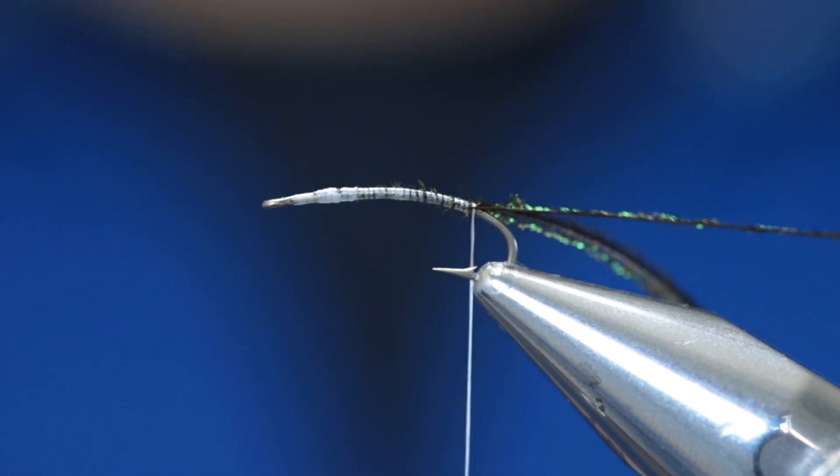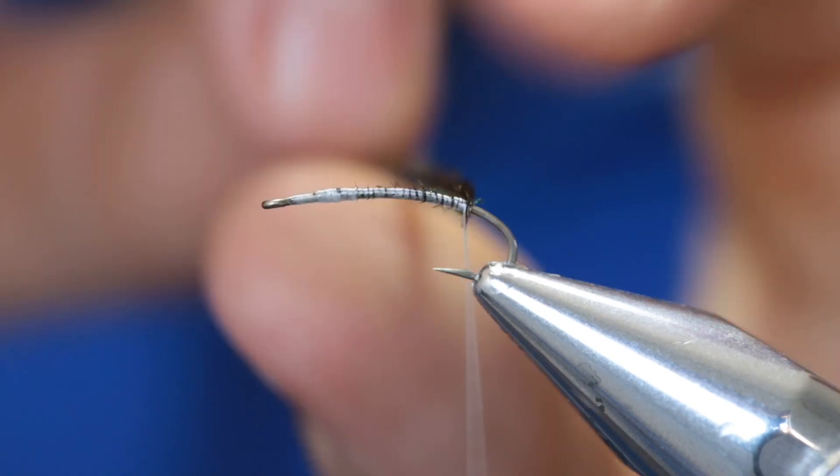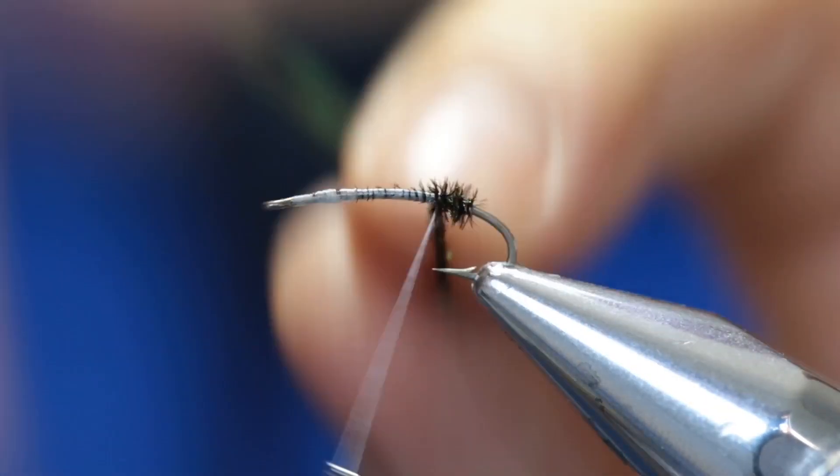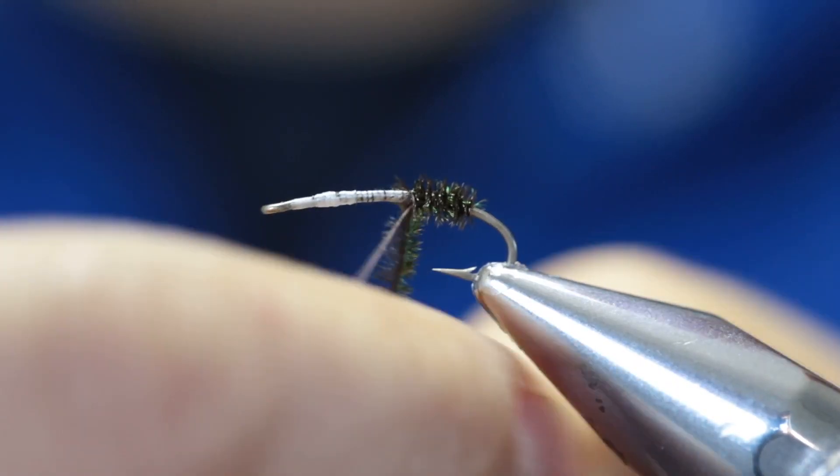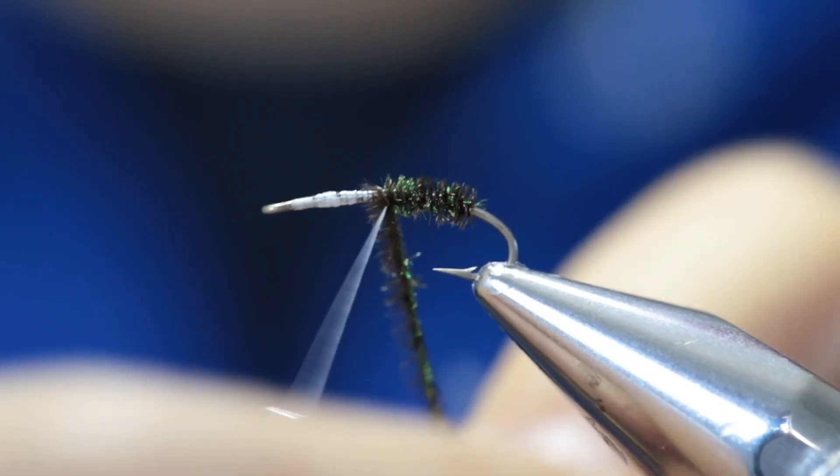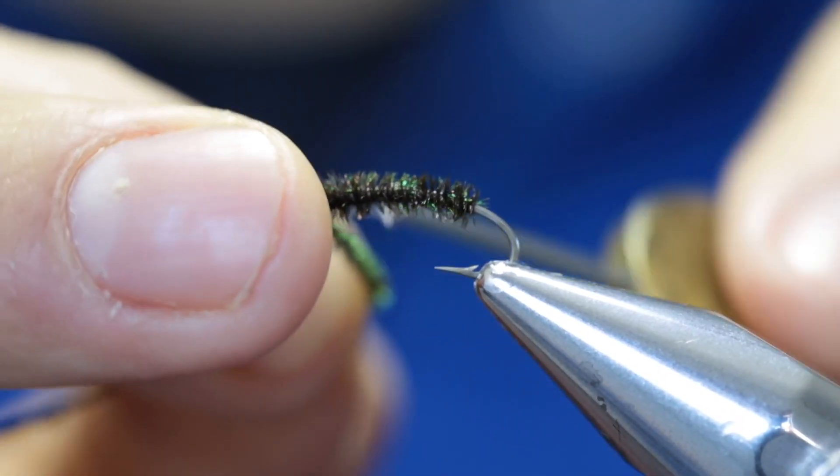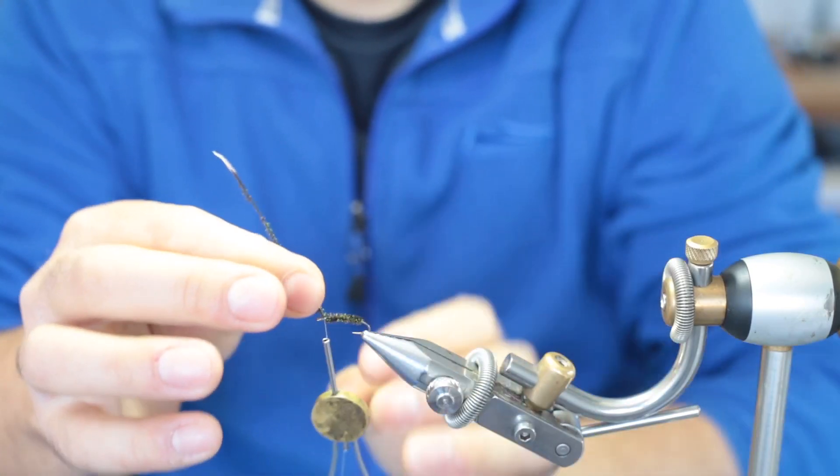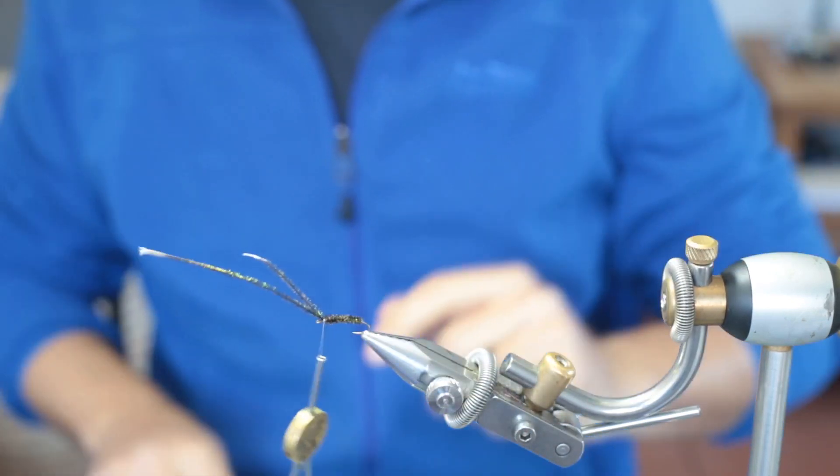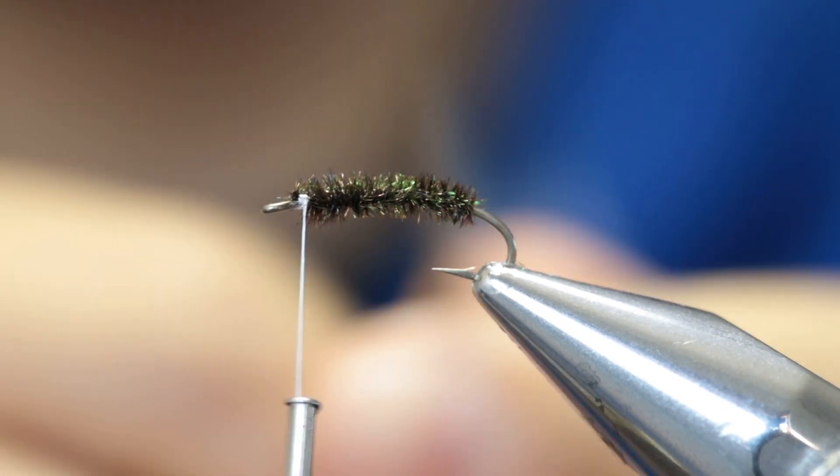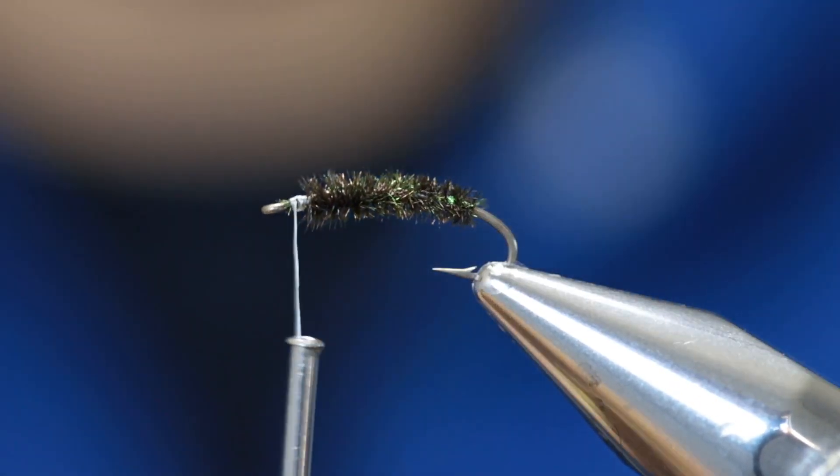Now we wrap the thread forward. We don't even move the thread forward, we just wrap the peacock herl forward and that will pick the thread up and move it forward with it. You can also use your rotary vise to do this. Move it forward like so, leaving a small gap between the peacock herl and the eye of the hook. Now we cut off the excess. So we need to leave a small gap between the eye of the hook and the peacock herl.